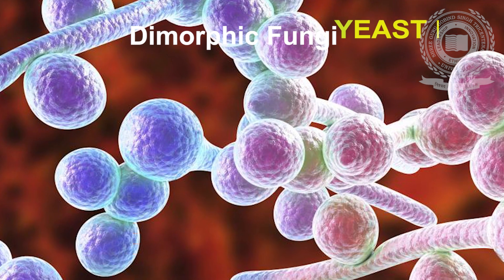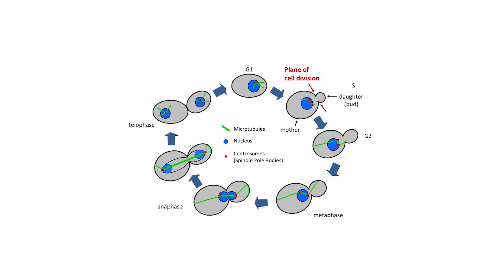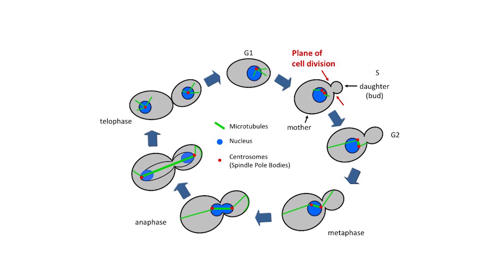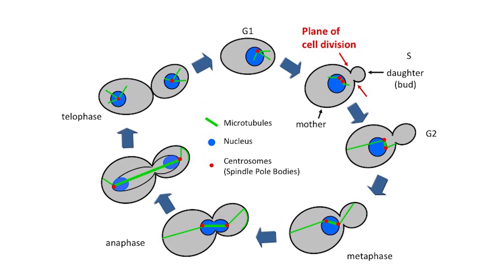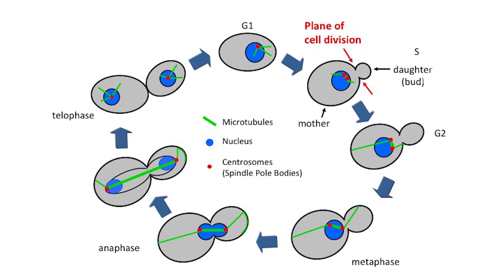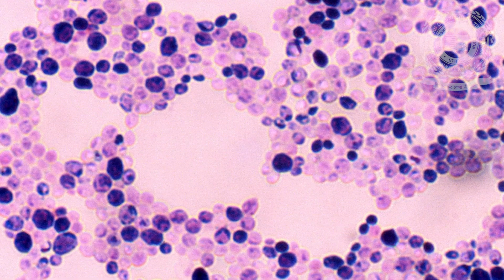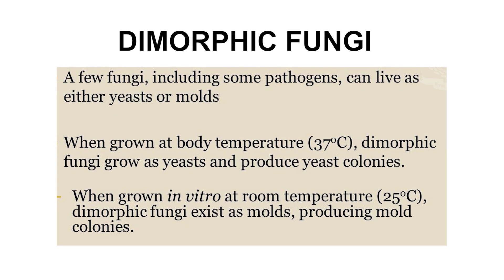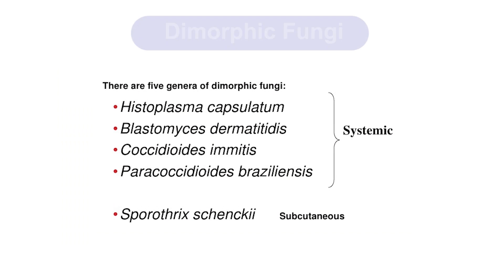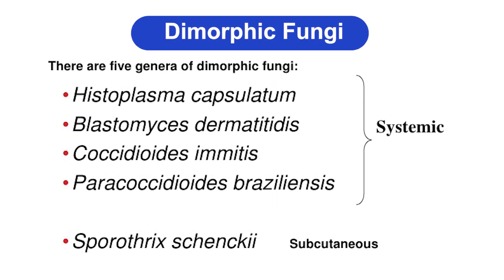The third group is yeast-like fungi. These fungi also reproduce by budding and exist as yeast for part of their life cycle, but buds fail to get separated; hence elongation takes place, forming pseudohyphae, as seen in Candida species. Fourth, dimorphic fungi. These fungi have two types of morphology at two different temperatures — 25°C and 37°C — such as yeast forms or spherules at body temperature. These pathogens are dimorphic and endemic in nature.